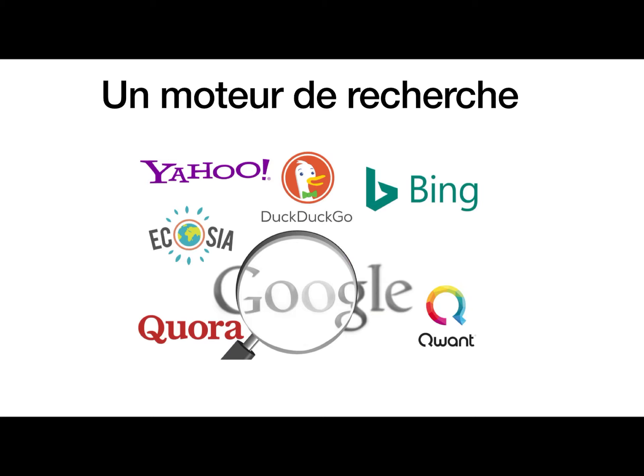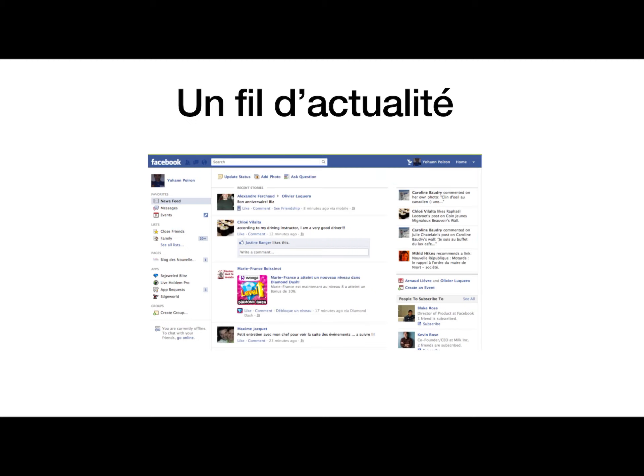Un moteur de recherche is a search engine. A search engine would be like Google, where you type in what you need to find and it brings up the results for you, or Yahoo, or whatever ones you mostly use. So un moteur de recherche, a search engine. Un fil d'actualité is a newsfeed. You might remember l'actualité from the past times vocab — we did the word for the news: les infos, les actualités, the news. So a newsfeed.